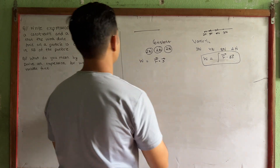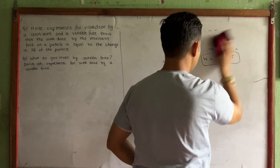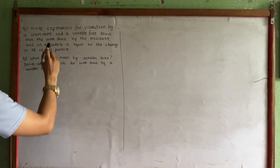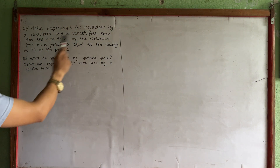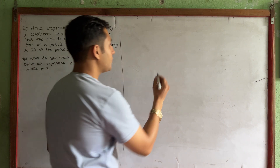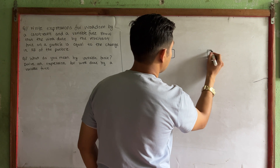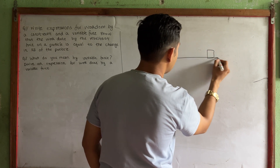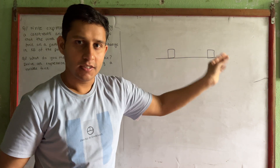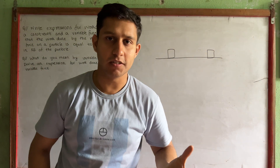Now, work done by the resultant force on a particle is equal to the change in kinetic energy of the particle. Let's look at this particle. There is a force acting on it, and the change in kinetic energy is equal to the work done. You can prove this.